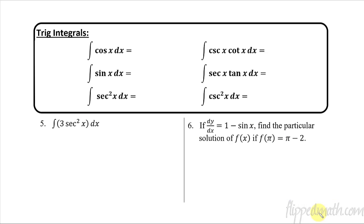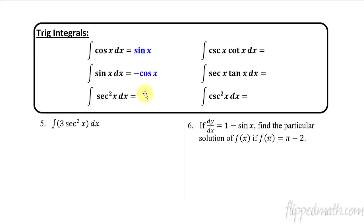Trig integrals — again, with trig integrals we're just going backwards from their derivatives. We already covered the first two in our last lesson: the antiderivative of cosine x is sine x, and the antiderivative of sine x is negative cosine x. What derivative gives us secant squared? That one's just tangent x.